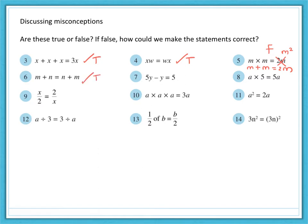Number seven, 5y minus y is not equal to 5. That is indeed false. Number eight, a times 5 is equal to 5a. That's true. Number nine, x divided by 2 is not the same as 2 divided by x. Order matters when we do division, so that's false.